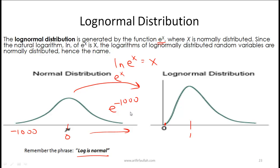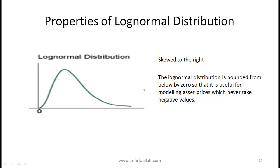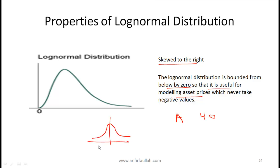From an exam perspective, the most important points are: a log normal distribution is skewed to the right, and it is bounded from below by 0. This makes it useful for modeling asset prices, which can never take negative values. Using a normal distribution — which can go below 0 — doesn't make sense for asset prices. Hence log normal distributions are used to model asset prices.